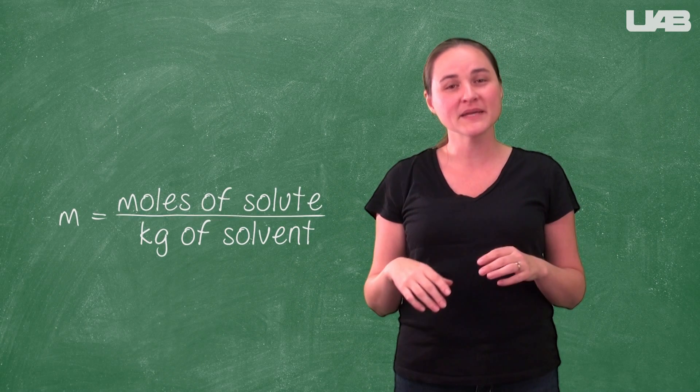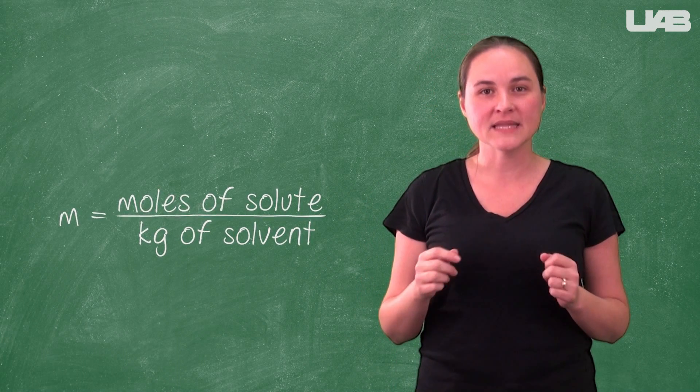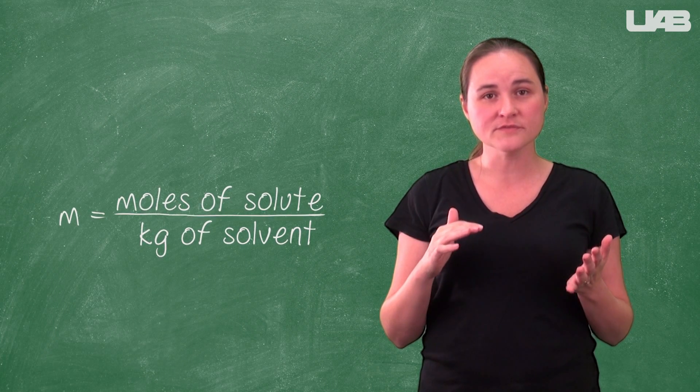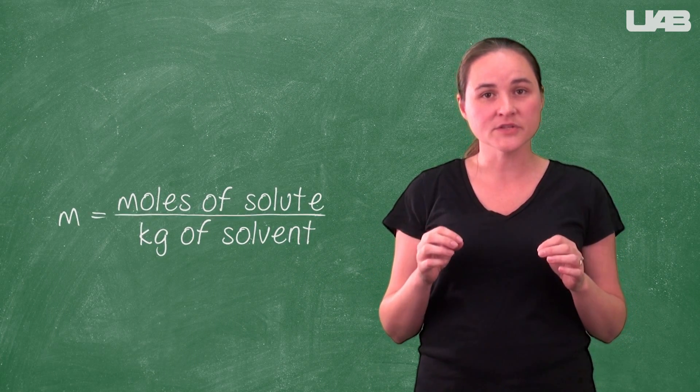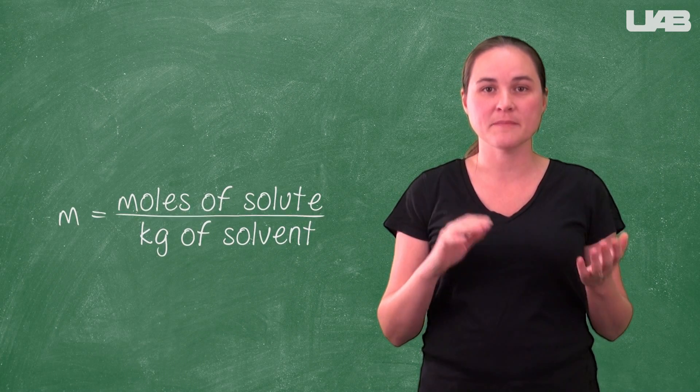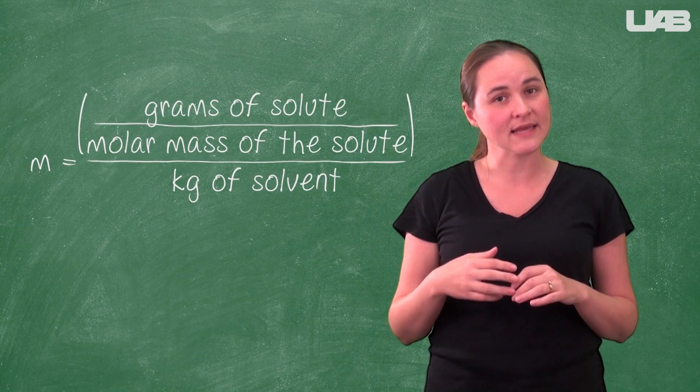Molality is similar to molarity, but it is different. It is important to note these differences. Molality is defined as moles of solute per kilogram of solvent. Moles of solute is still calculated by dividing the mass of the solute by its molar mass, so it can also be written as shown.